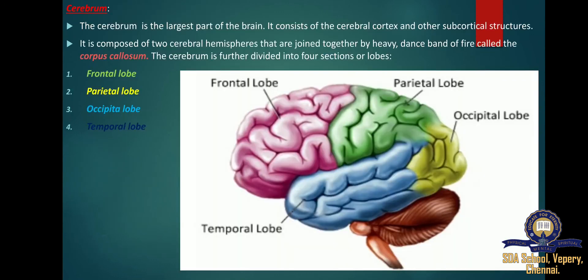The cerebrum is the largest part of the brain. It consists of the cerebral cortex and other subcortical structures. It is composed of two cerebral hemispheres joined together by a heavy dense band of fibers called the corpus callosum. The cerebrum is further divided into four sections or lobes: the frontal lobe, parietal lobe, occipital lobe, and temporal lobe.